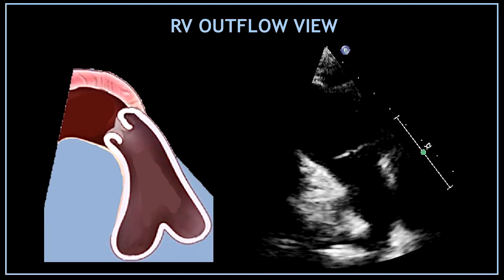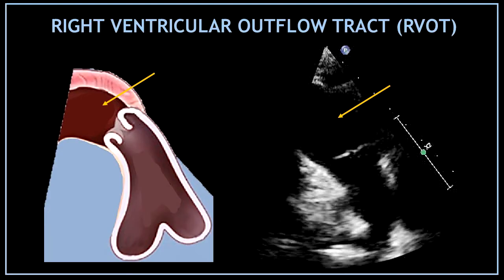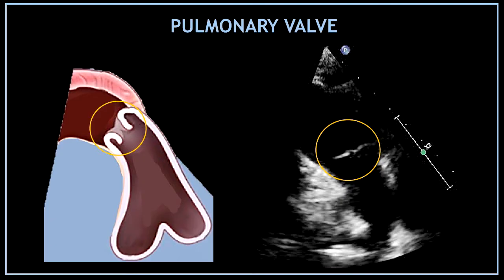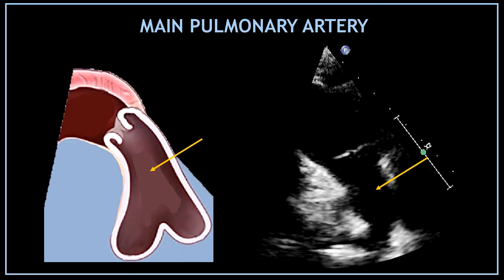Now let's continue with the right ventricular outflow view. I'm going to show you one by one all the structures visualized here. First, at the top of the screen and before the valve we have the right ventricular outflow tract. Now we can find the pulmonary valve just after the right ventricular outflow tract. Under the pulmonary valve we have the main pulmonary artery.